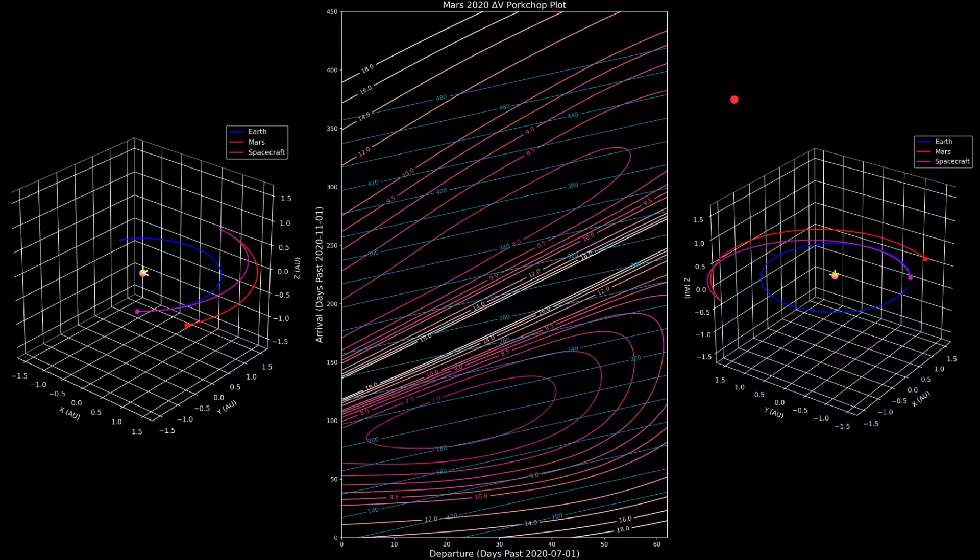Now the first time you ever see a pork chop plot, it kind of looks like a huge mess and makes no sense. But this video will be walking through step by step exactly how to read these plots and why they are extremely useful in designing interplanetary trajectories.